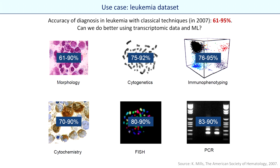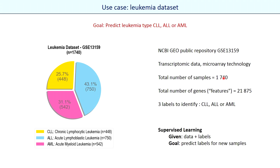This slide shows the accuracy of different classical techniques for leukemia diagnosis. The accuracy varies from 61 to 95 percent. Our goal will be to use transcriptomic data and to predict leukemia diagnosis with machine learning algorithms. I will use the example of leukemia transcriptomic data recorded with microarray technology. The data are provided by the NCBI GEO public repository. It contains the expression levels for more than 20,000 genes for three leukemia types: chronic lymphocytic leukemia, acute lymphoblastic leukemia, and acute myeloid leukemia. The goal is to predict leukemia type.